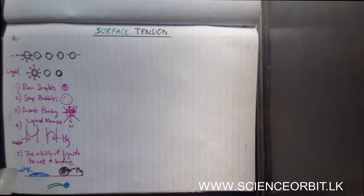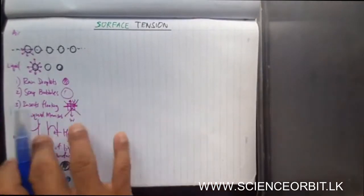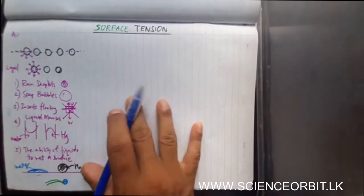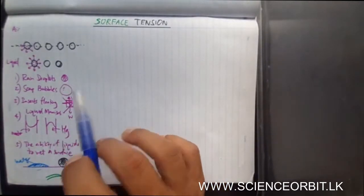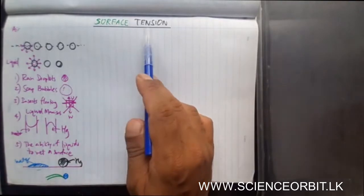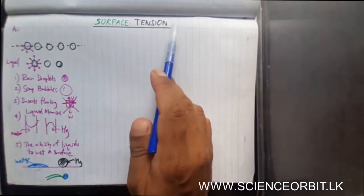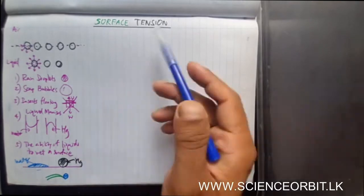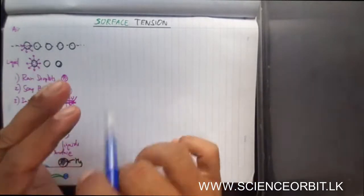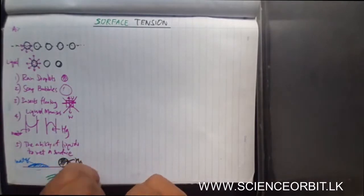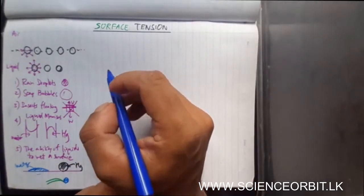Now let us try to understand the quantitative analysis of surface tension. This was the qualitative analysis. Just like with viscosity, where we used the coefficient of viscosity and wrote equations, for surface tension we also need something to compare it. Surface tension is defined using a specific equation.